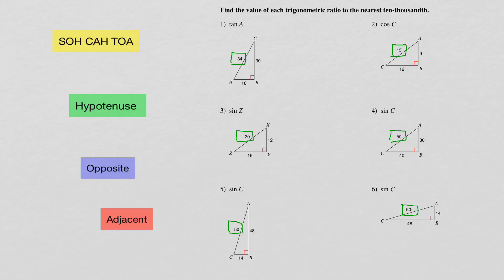Now let's look at number one. What we're solving for is the tangent of A. Here's A. Tangent, we see from SOHCAHTOA, is going to be opposite divided by adjacent. Just like the hypotenuse is opposite the 90-degree angle, whichever angle we're solving for — we're solving for A — the side opposite is the side that's not touching it. So that must mean this is your adjacent side. Opposite over adjacent, we get 30 over 16.